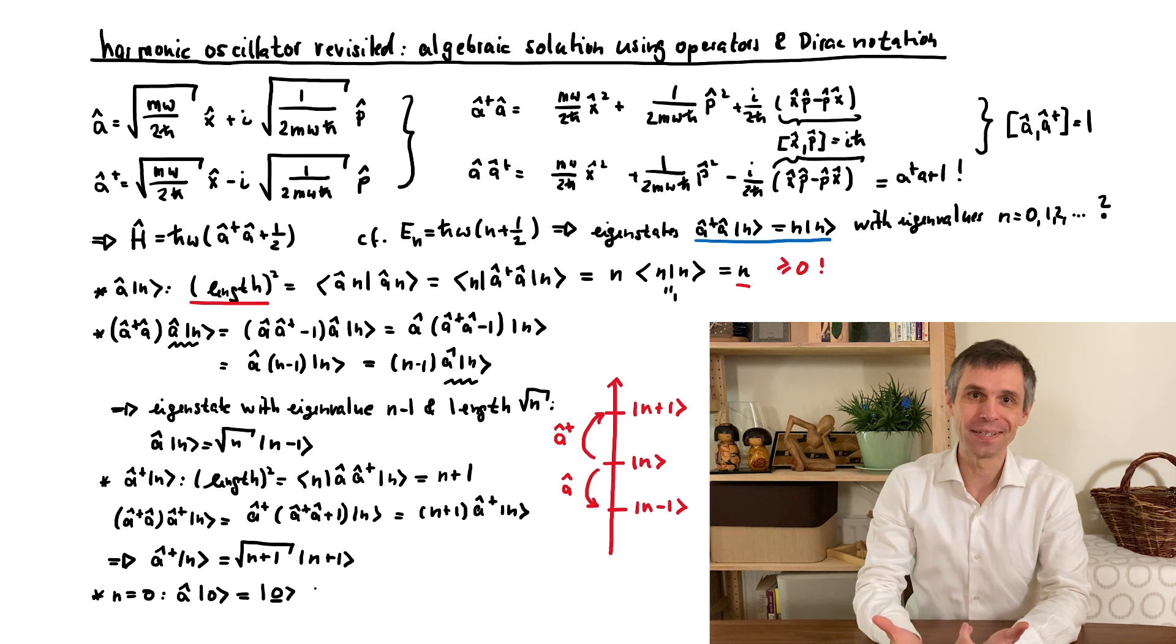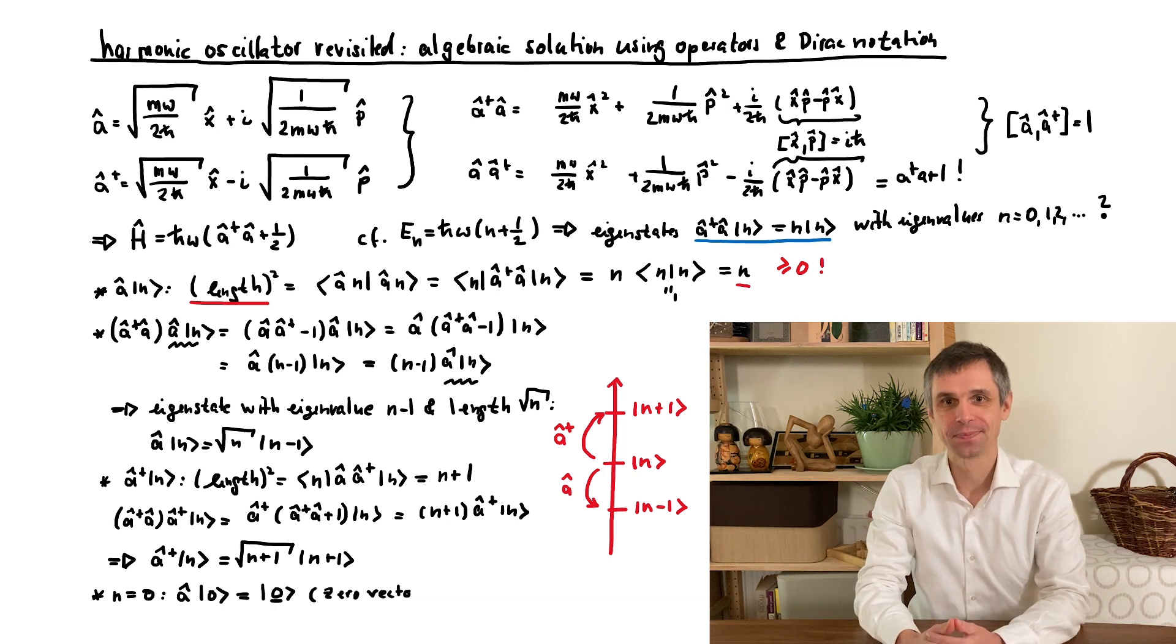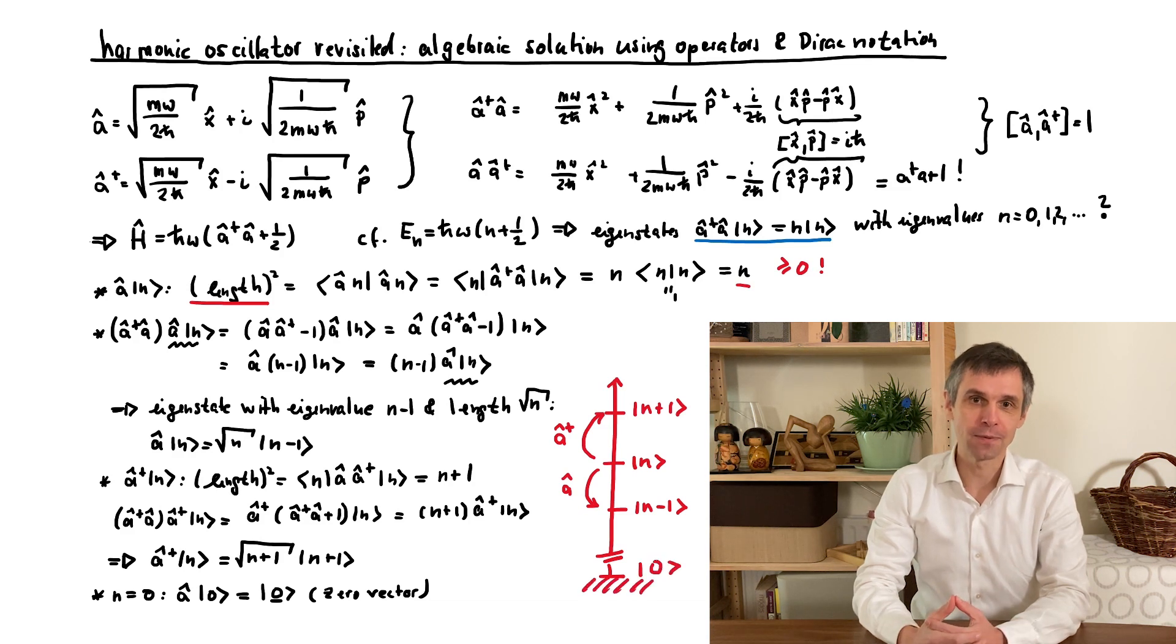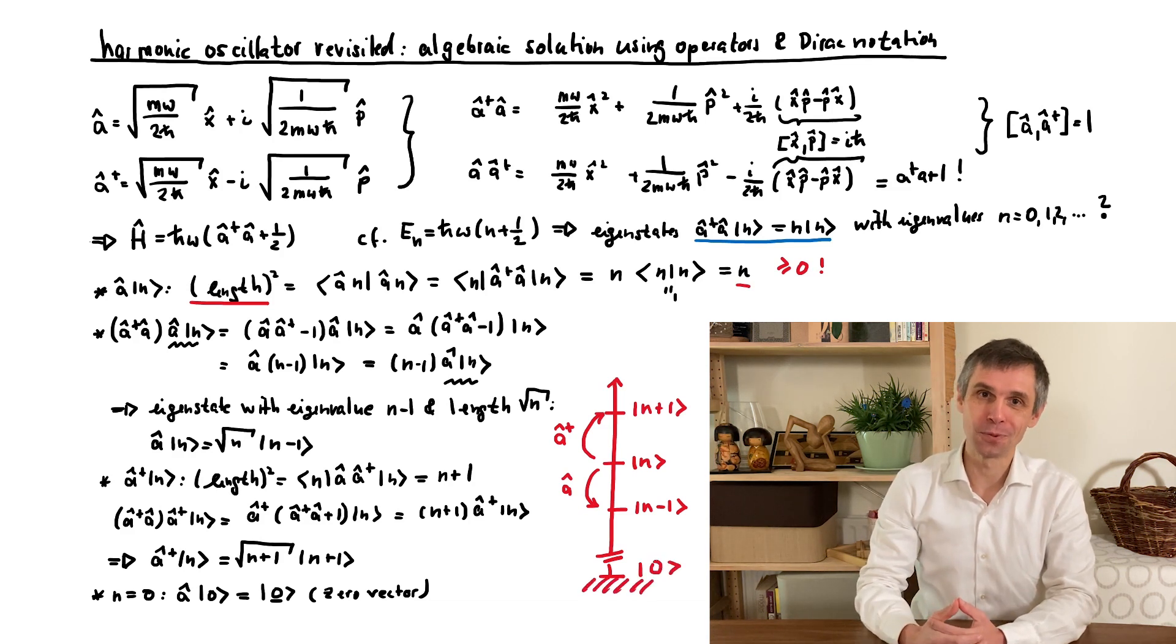But according to the precise relation between the states, this fixes n equal to 0 for the lowest state. And hence, n runs over all non-negative integers. So going back to where the number operator appeared in the Hamiltonian, we recover the energies that we already obtained in the previous solution.